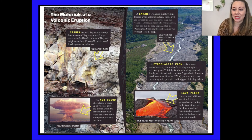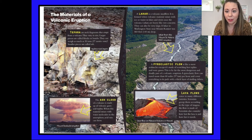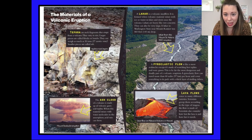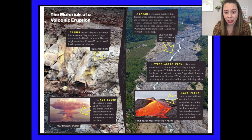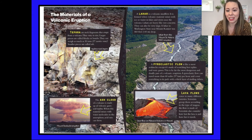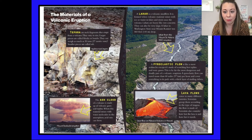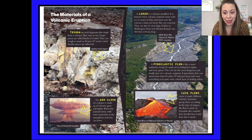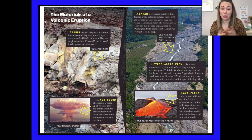A pyroclastic flow is like a snow avalanche except it's made of scorching hot tephra and toxic gases — imagine instead of snow, it's scorching hot. This is by far the most dangerous and deadly part of a volcanic eruption. A pyroclastic flow can travel more than 60 miles per hour and cover everything in its path with a thick layer of sizzling debris. Lava flows come in many different varieties; scientists group them according to the type of magma, how hot the lava is, and how fast it travels. We will be learning more about volcanoes and lava in our science lessons.